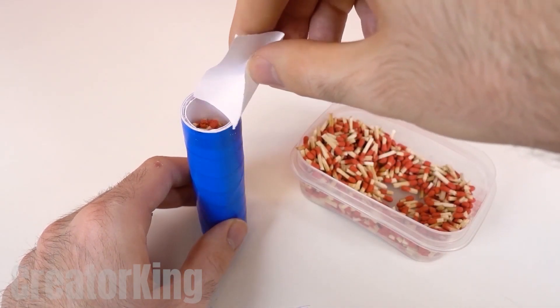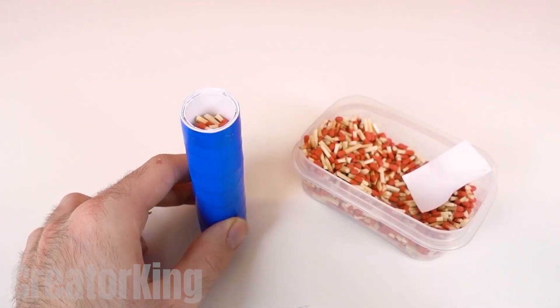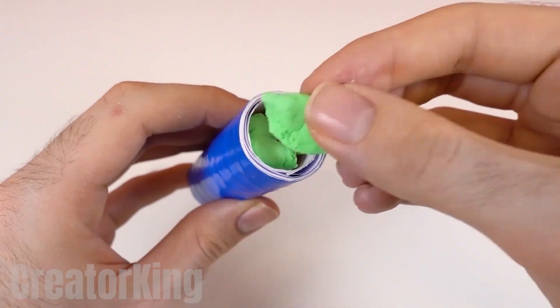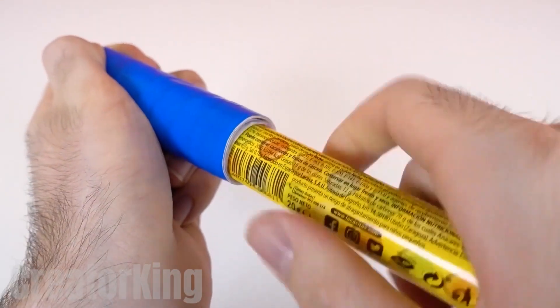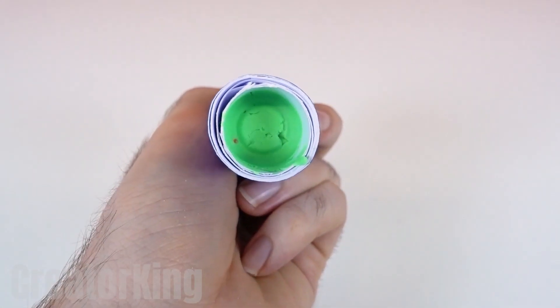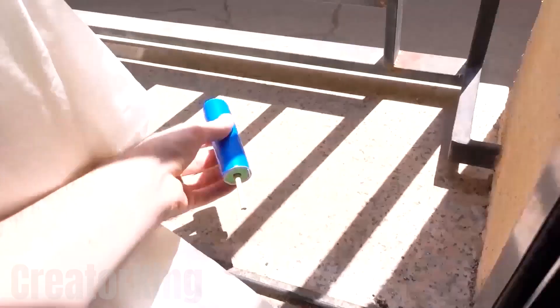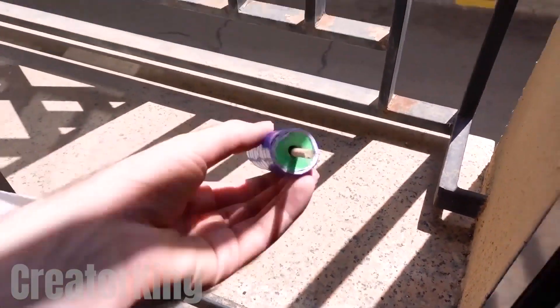I hope you have some leftover dry Play-Doh because we'll need it to seal the upper part of the tube. Don't forget to compact it well. It should look something like this. Put a stick in the hole for the wick and put it in the sun to harden the clay even more. After you've done your errands and several hours have passed, go get it again. Remove the wooden stick.